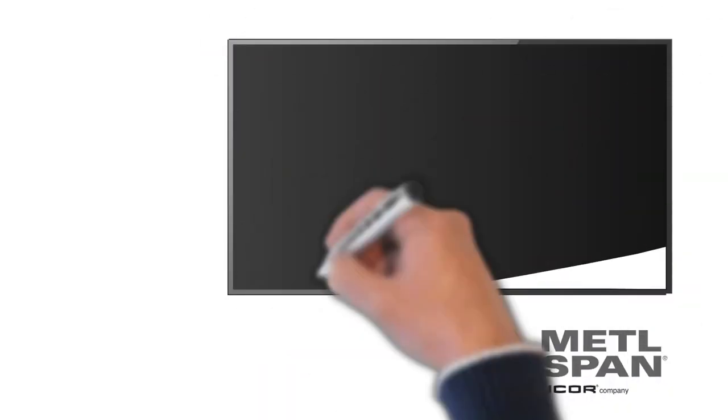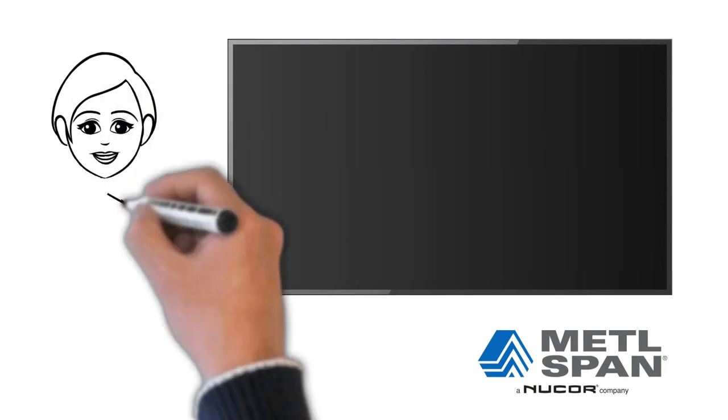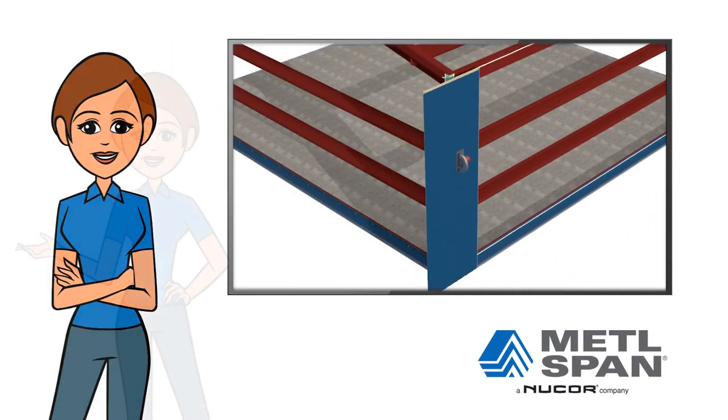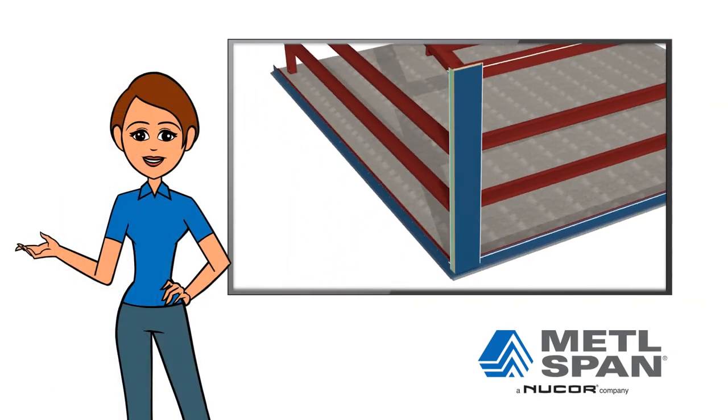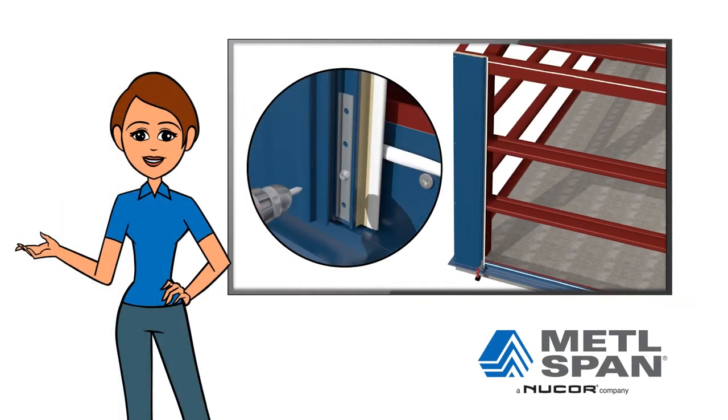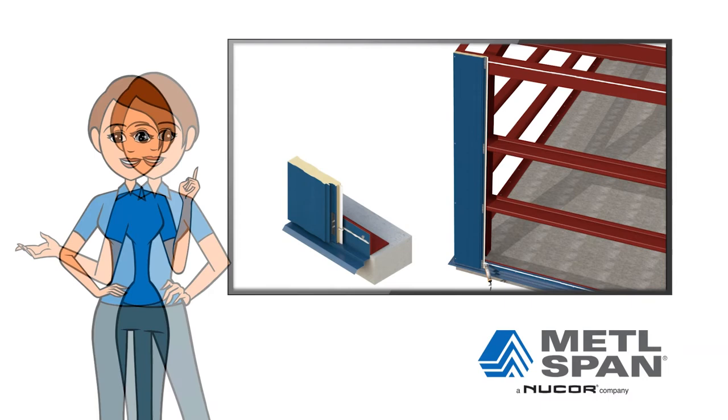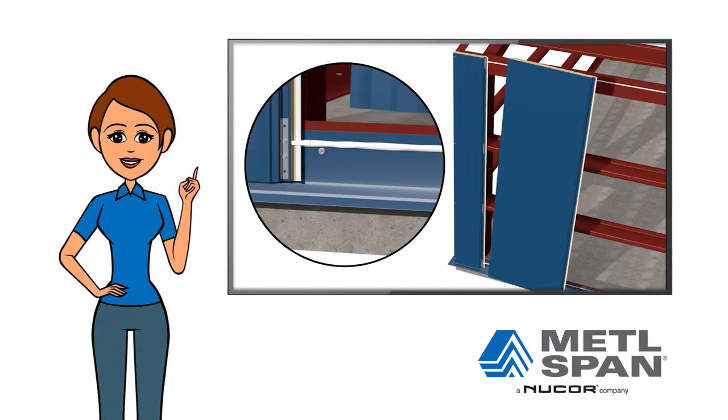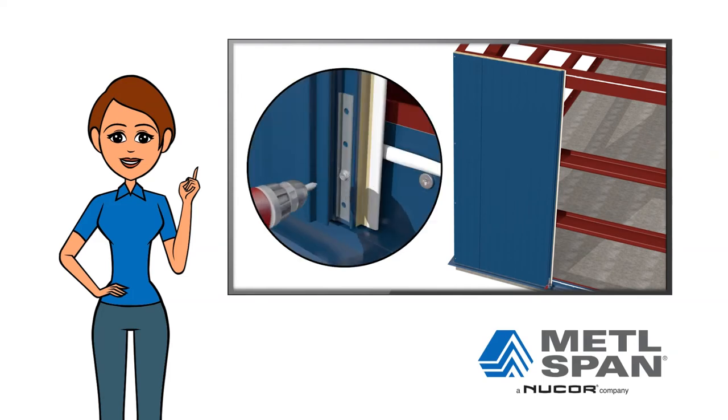Designed for energy efficiency from the inside out, the energy-saving features of Metalspan IMPs don't stop at their core either. They also feature double-tongue and groove joinery and concealed clips that eliminate thermal bridging to achieve the benefits of continuous insulation and discrete full-perimeter non-curing sealant for a superior air barrier.